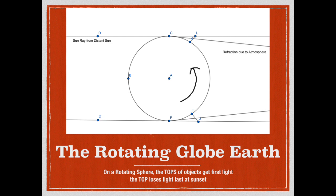The pattern of light at sunrise and sunset matches a rotating spherical Earth. It is incompatible with a flat Earth with a small local sun moving over its surface. We could just stop there, but there's more. One thing about science is that we want a lot of things that all point towards the same conclusion.